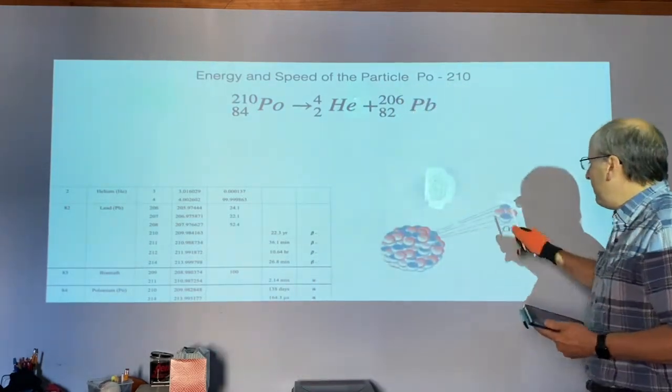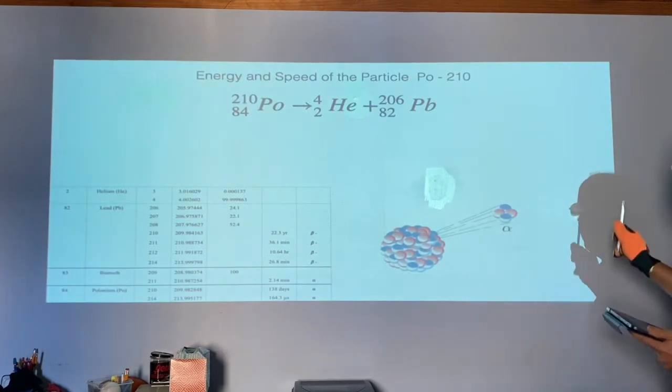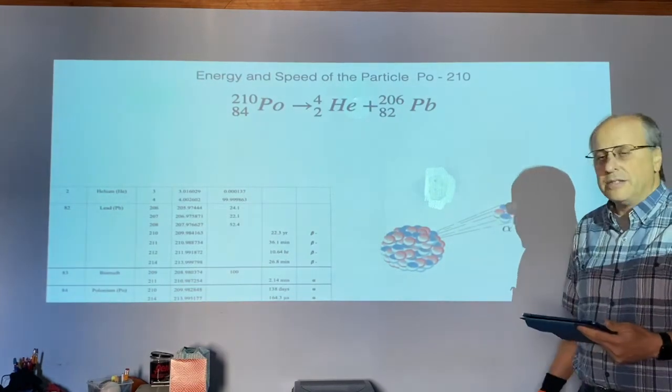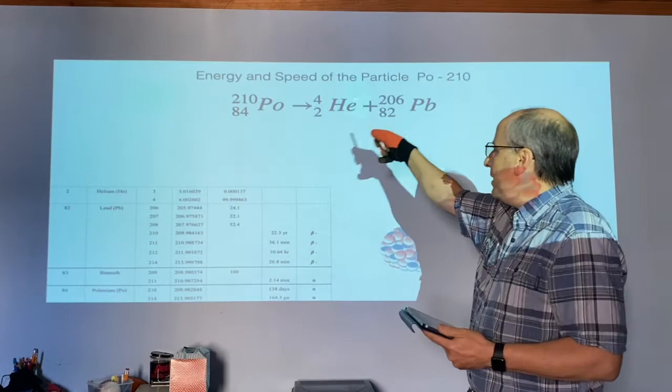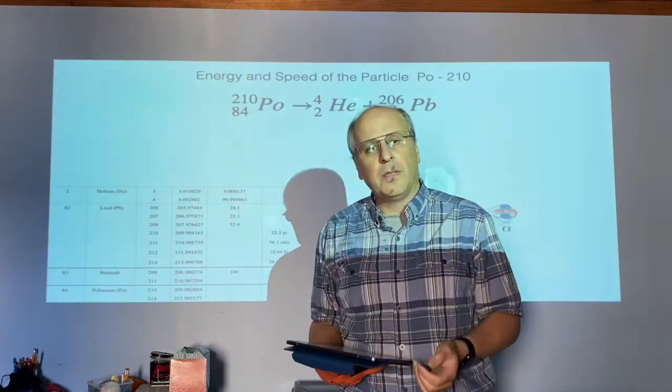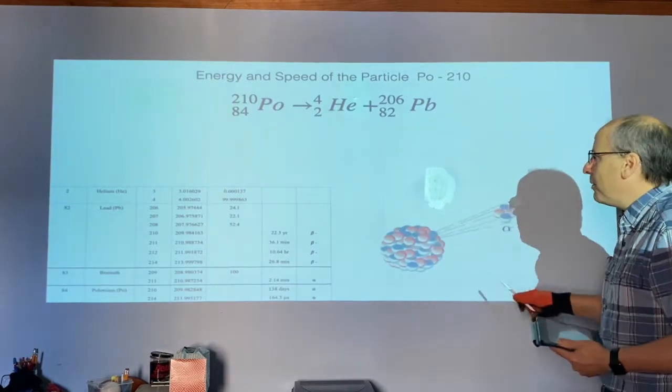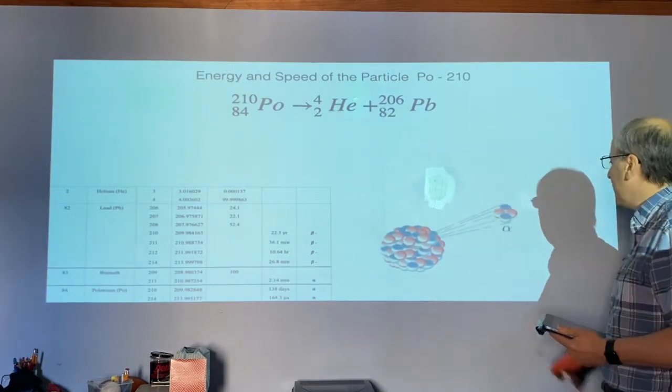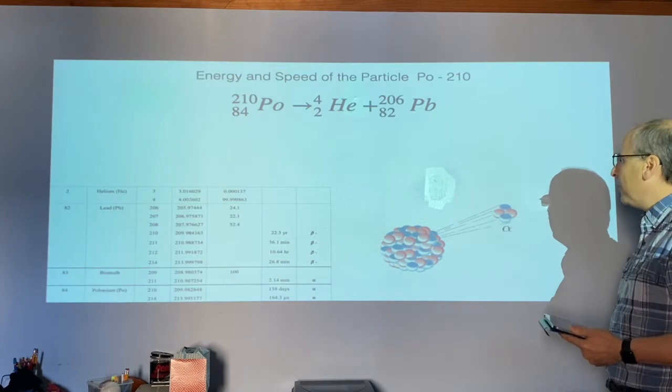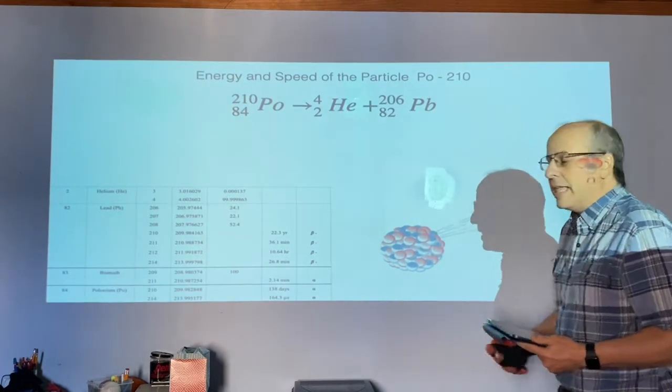To see a specific alpha particle and figure out how much energy it has, you start by writing the equation like we did yesterday for the decay of your substance. So we start with polonium-210. It gives off an alpha particle and turns into lead-206.